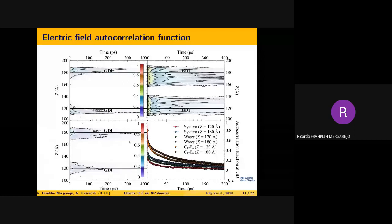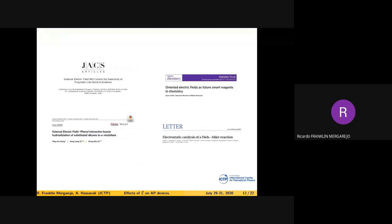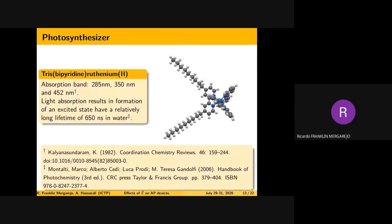Basically, what we get is that everything correlates on the picosecond timescale. Then we tried to see what happened with the effect of the electric field, which is a very important topic in modern chemistry. How do we use the electric field? We went for our photosynthesizer that is well known and has the advantage of having a very long lifetime of the excited state and very well-known bands.